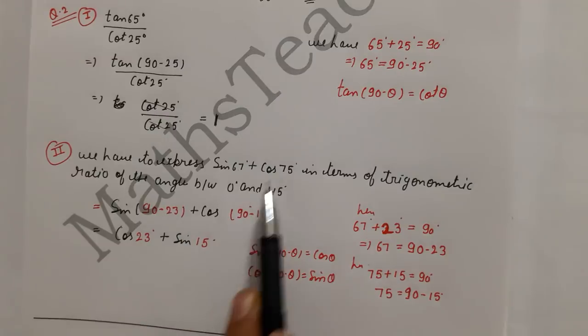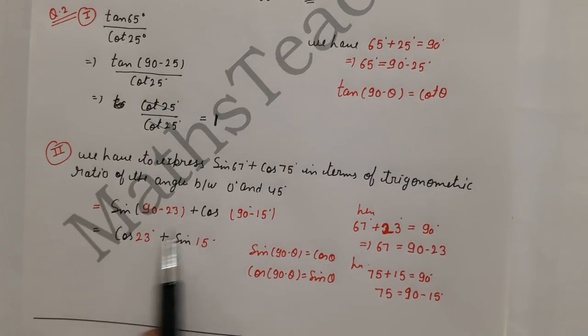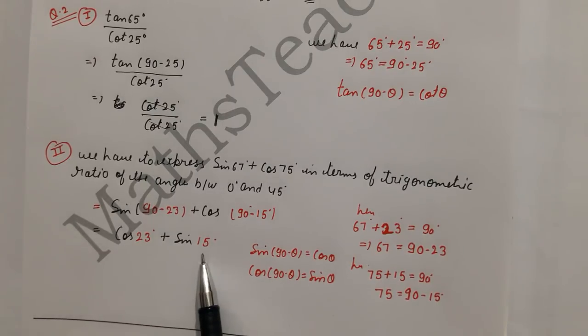We have to use 90 minus 23 and 90 minus 15. We know sin(90 - θ) = cos(θ) and cos(90 - θ) = sin(θ). So this is our angle changed between 0 and 45. 23 comes between 0 and 45, and 15 also comes between 0 and 45.